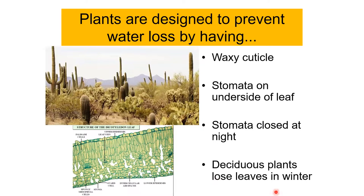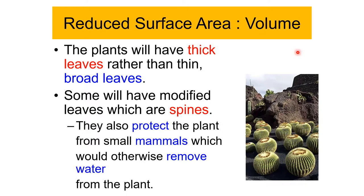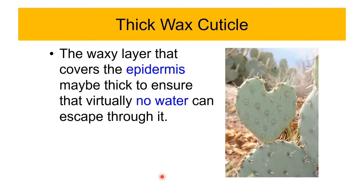Xerophytic adaptations include: reduced surface area to volume ratio — these plants have thick leaves rather than thin broad leaves. Some have modified leaves that are spiny, which also protects the plant from small mammals that would otherwise remove water. A thick waxy cuticle covers the epidermis to ensure virtually no water escapes through it. Some plants also have thicker epidermis.